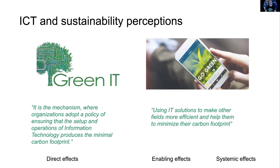You might have heard of these two different terms: green IT and green by IT. Green IT usually means doing things more efficiently — when we add the term 'green' in front of something like green IT, it means that we are making it use less resources, produce less carbon footprint, and so on. And then there is the other side where we are talking about enabling effects and systemic effects, where we are achieving green by IT or through IT — using IT solutions to make other fields more efficient and help them minimize their carbon footprint.